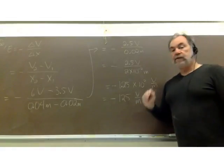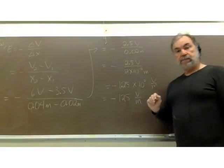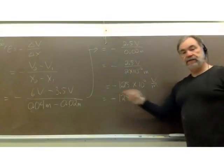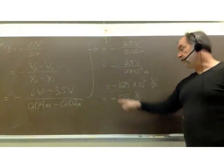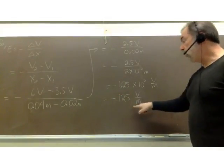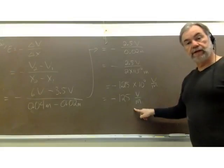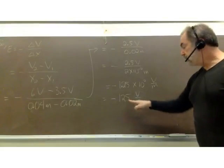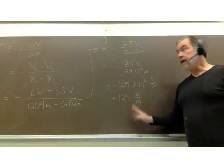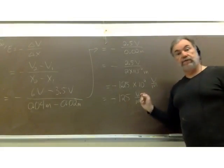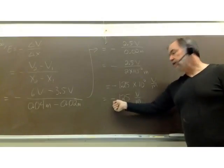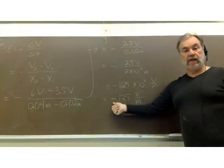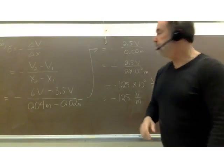As for the negative sign, that's perhaps more interesting. It indicates the direction of the electric field vector — which is, after all, what we just calculated. It looks like I just calculated the magnitude, but the direction is at least implied by this negative sign.